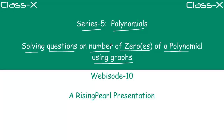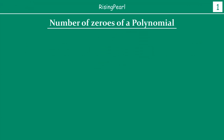Today we are going to focus on how to solve questions on — and this is important to understand — we are actually not going to find out the zeros of a polynomial, but we are going to focus on the number of zeros of a polynomial using graphs. We begin with a quick recap of what we have learned so far about the number of zeros of a polynomial.